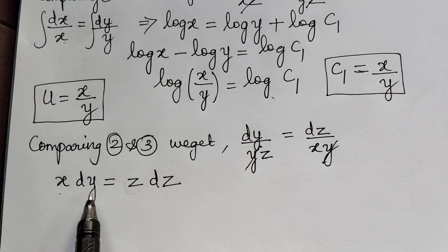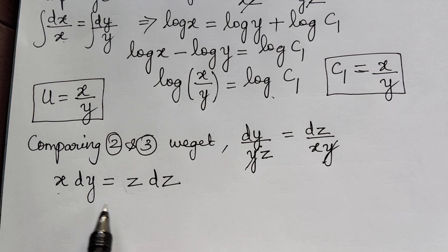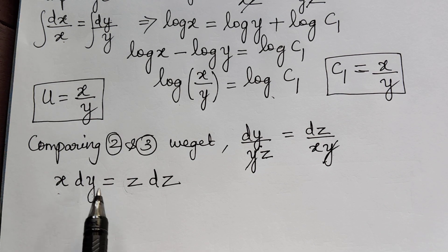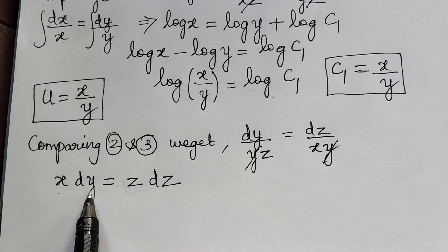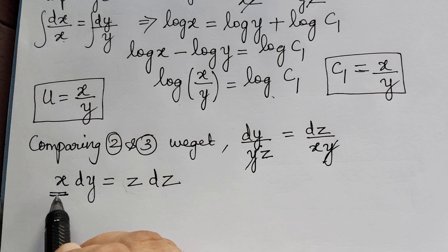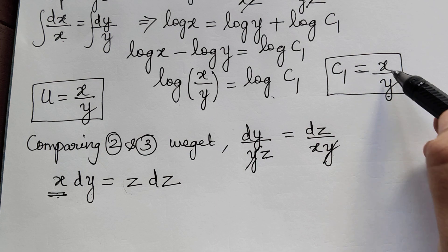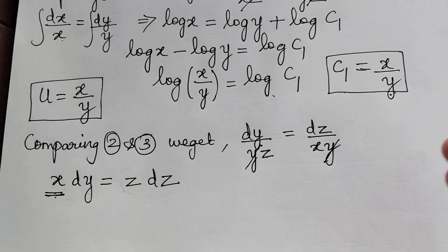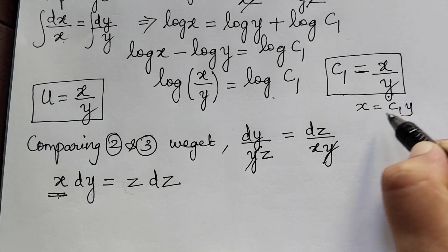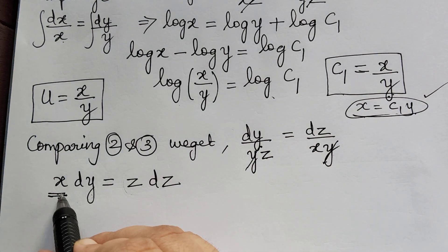In this case, we have to compare the other equations, but comparing equations 1 and 3 leads to the same difficulty. Therefore, we must use the method of substitution, as in our previous problem. We substitute the value of x using the first solution: c1 equals x by y, so x equals c1·y. We can replace x by c1·y.